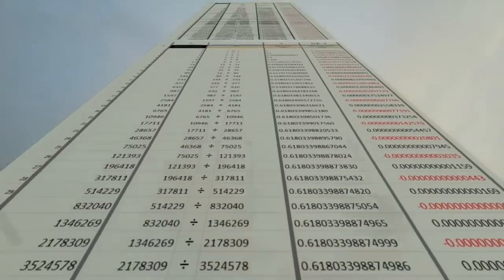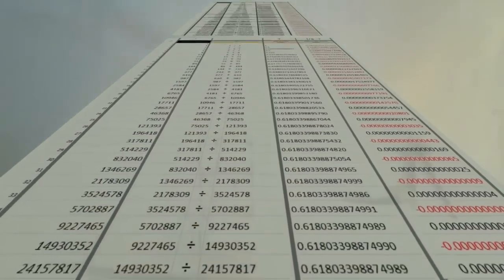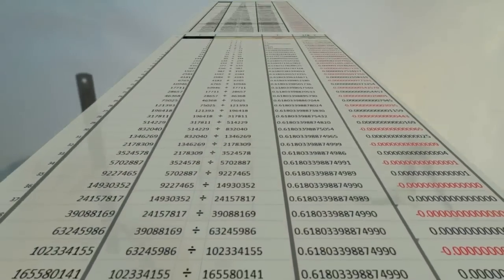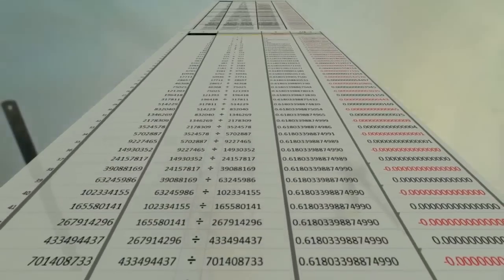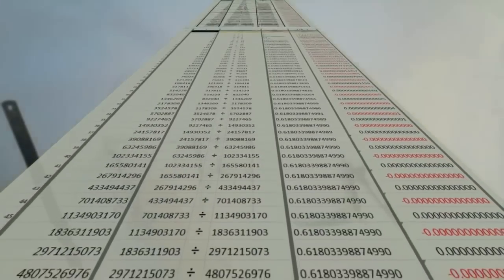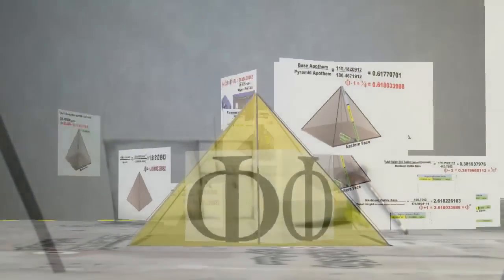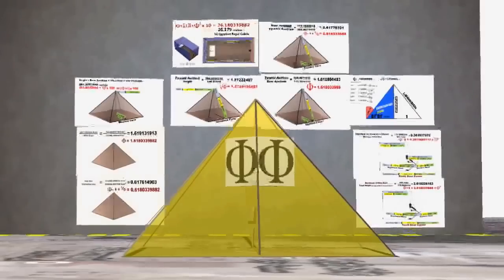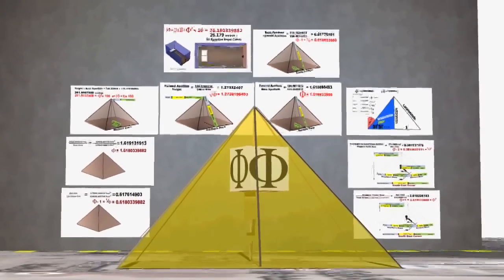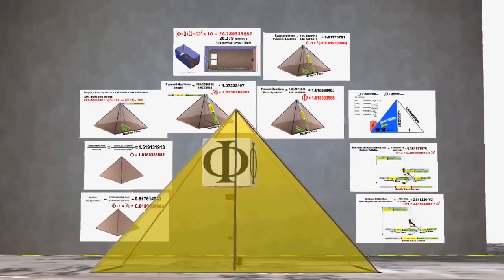If you divide 13 by eight, you get 1.625. And if you divide the larger number by the smaller number, then these ratios get closer and closer to about 1.618, known to many people as the golden ratio, a number which has fascinated mathematicians, scientists, and artists for centuries.